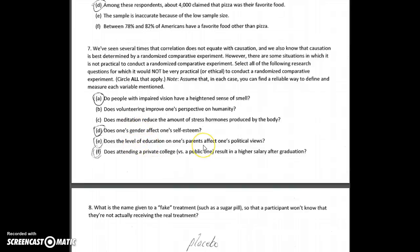Level of education of one's parents — think about what we're doing here. We're randomly saying your parents have to get a PhD, your parents have to get a master's degree, your parents aren't allowed to go to college. This is doubly impractical: one, you can't tell people that; two, it's already in the past and you can't change the past. For attending a private versus a public college, we would randomly take a group of, say, 100 students and tell 50 of them they have to attend a private college and 50 a public one. Students probably would not be excited about this, parents would definitely not be on board, and the money involved would make it very impractical.